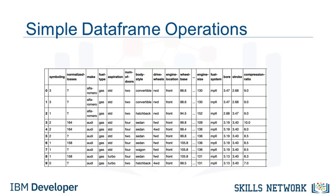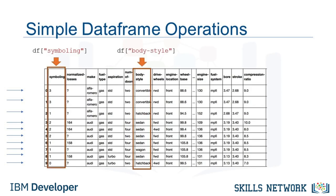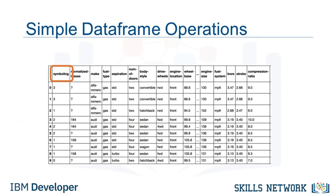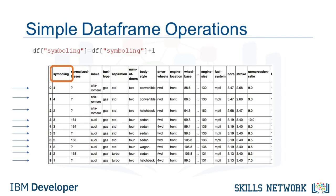In Python, we usually perform operations along columns. Each row of the column represents a sample, i.e., a different used car in the database. You access a column by specifying the name of the column. For example, you can access symboling and body style. Each of these columns is a pandas series. There are many ways to manipulate data frames in Python. For example, you can add a value to each entry of a column. To add one to each symboling entry, use this command. This changes each value of the data frame column by adding one to the current value.